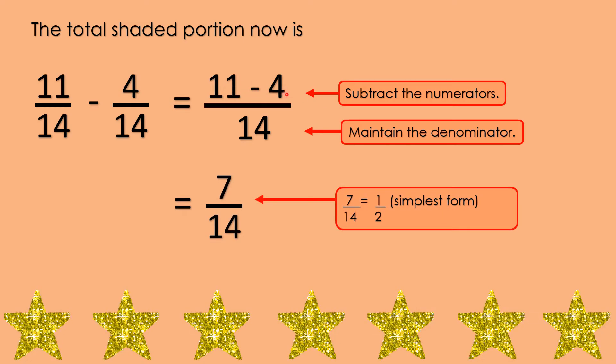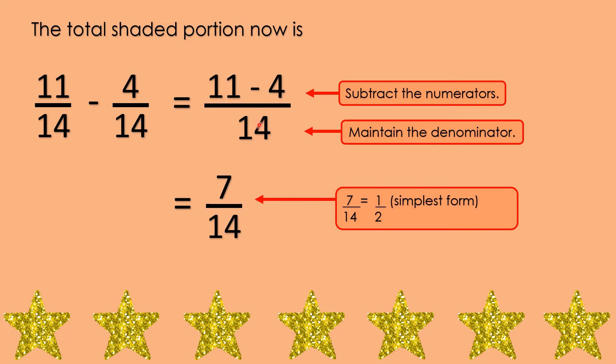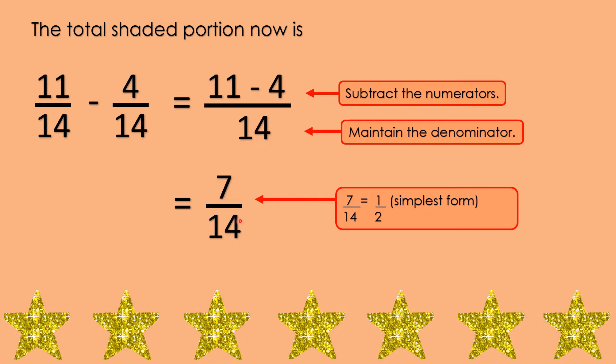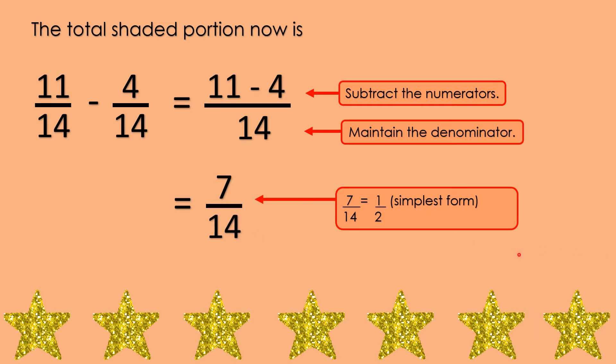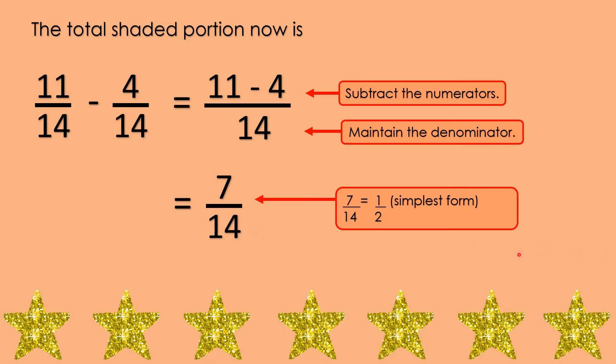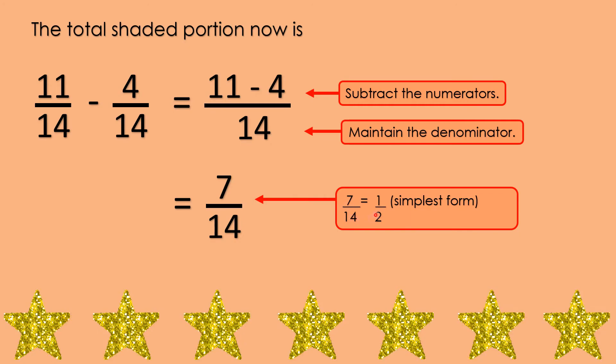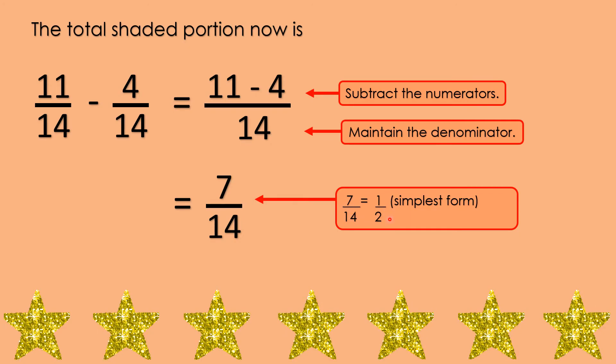11 minus 4 is 7. Then, maintain or copy the denominator. That is, 7 fourteenths. But, you can still simplify or make 7 fourteenths into the simplest form. And, the simplest form is 1 half.